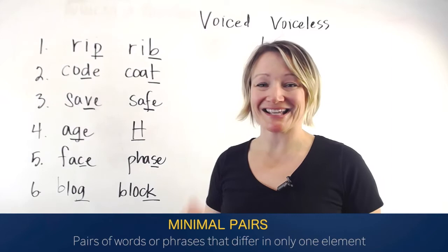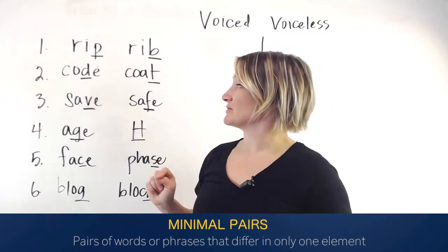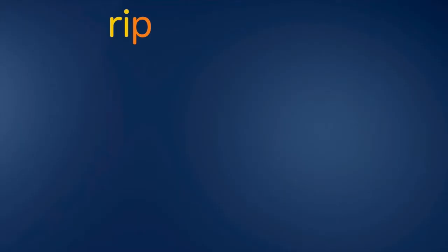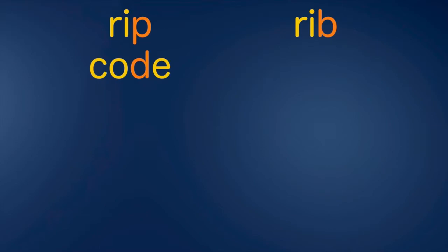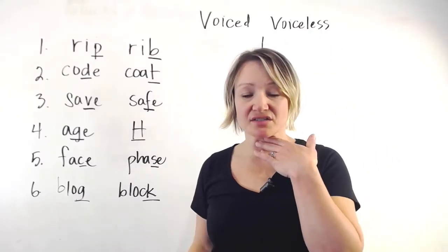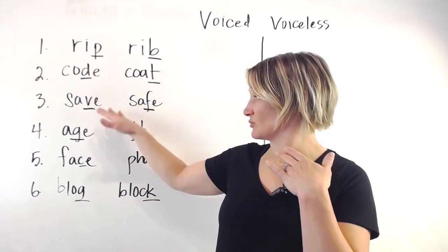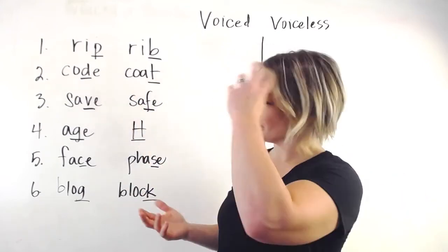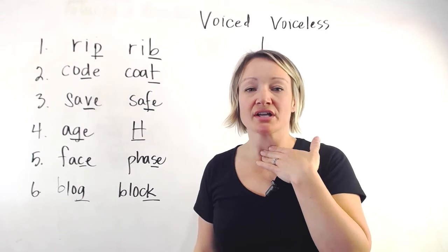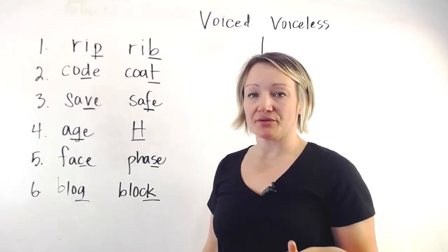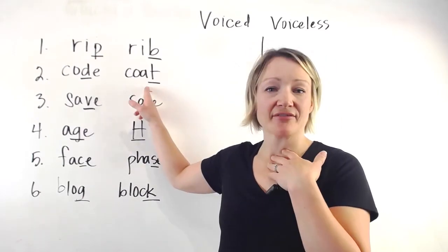So we have: rip and rib, rip and rib; code and coat, code and coat. You can practice these words as I'm saying them — just repeat them. And also you can feel here if you're pronouncing them correctly — one will have no voice and one will have voice.